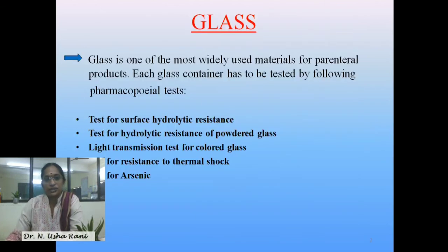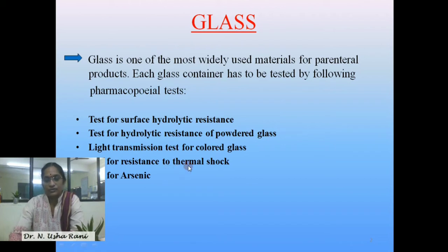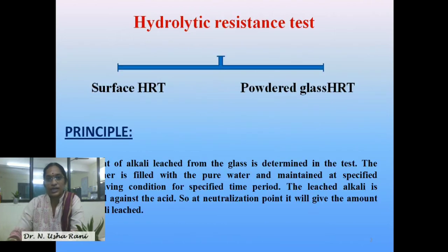The different tests for glass containers are the surface hydrolytic resistance test, surface hydrolytic resistance test for powdered glass, light transmission test for colored glass, test for resistance to thermal shock, and test for arsenic. These are the most primary tests that have to be performed on glass containers. The hydrolytic resistance test is of two types: surface hydrolytic resistance test and powdered glass hydrolytic resistance test.